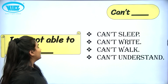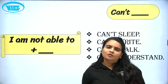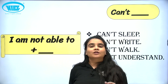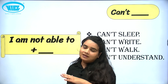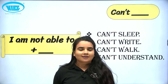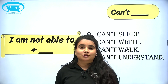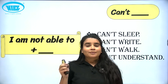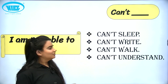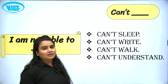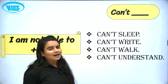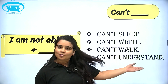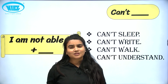The another one is 'I am not able to.' Jab aapko kehna hai ki mein yeh nahi kar pa raha, so you will say: I am not able to, and then use the first form of verb. So: mein likh nahi pa raha — I am not able to write. Mein bol nahi pa raha — I am not able to speak. Short form mein bol sakte hai: can't. Can't sleep, can't write, can't walk, or can't understand.